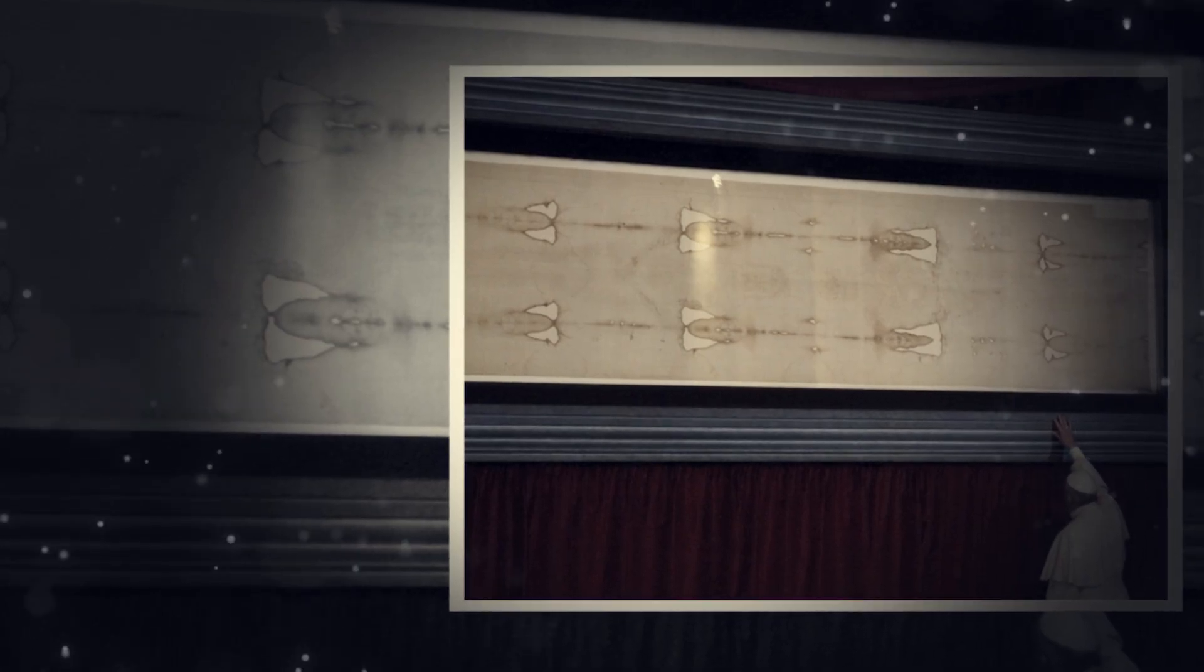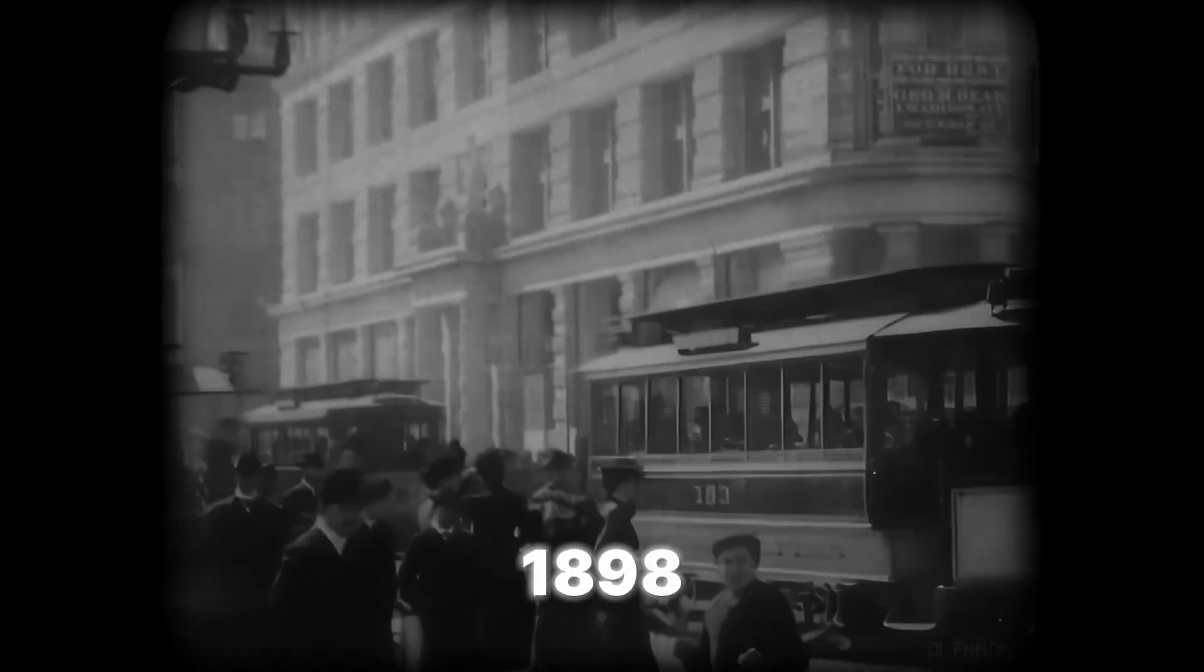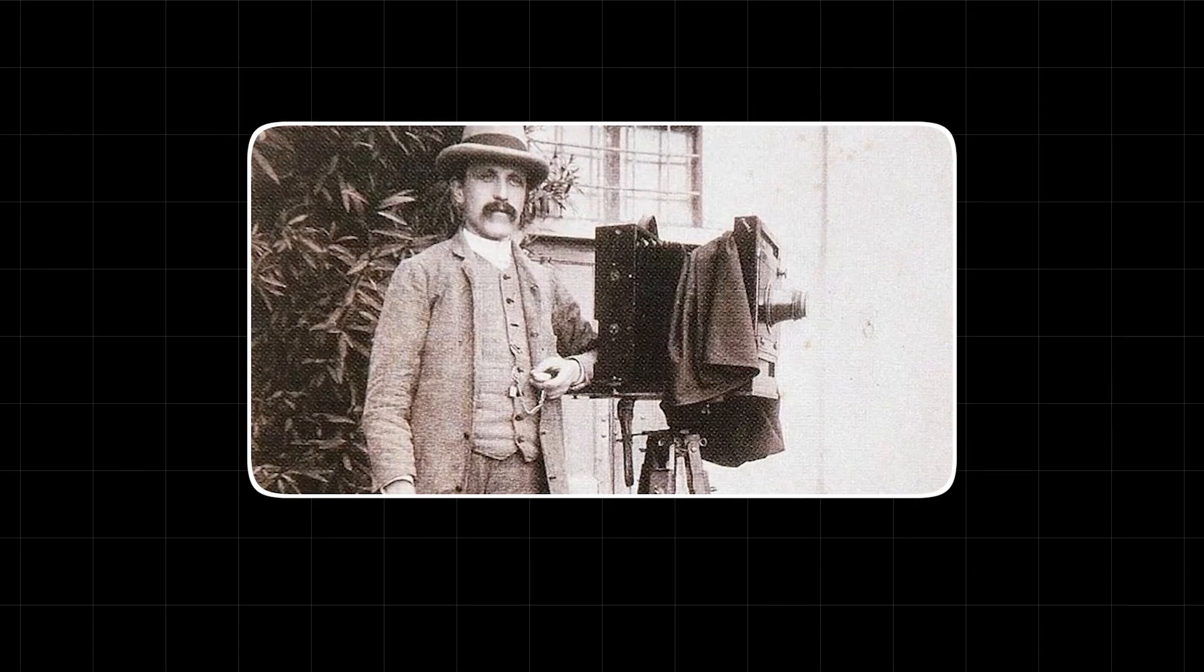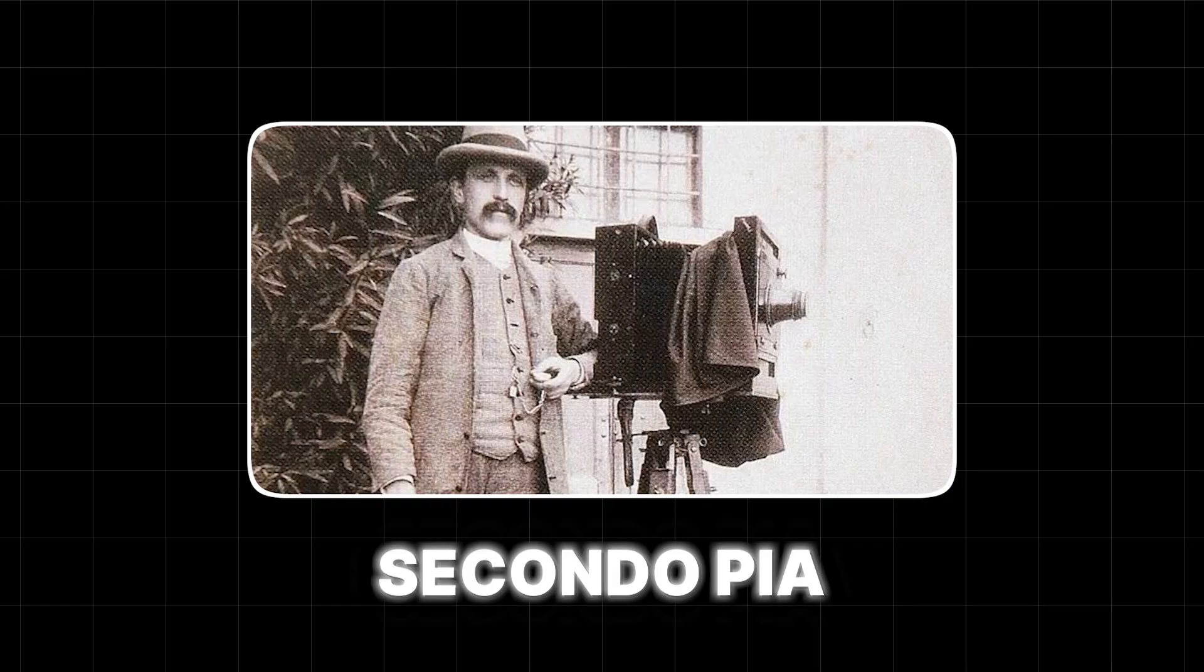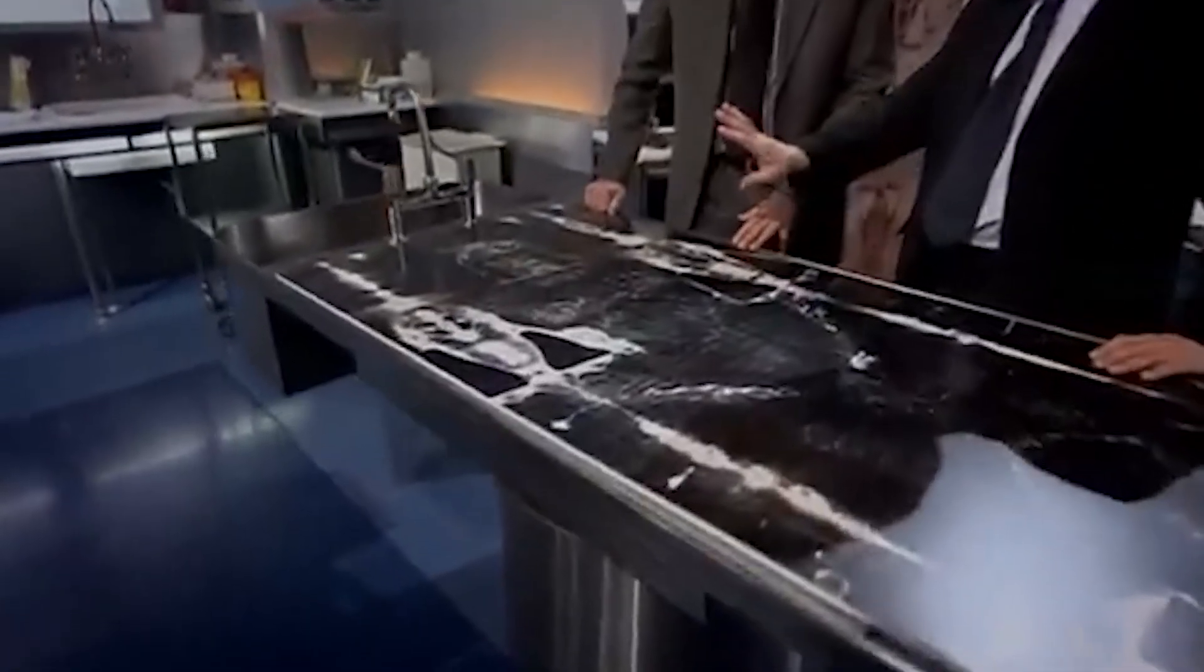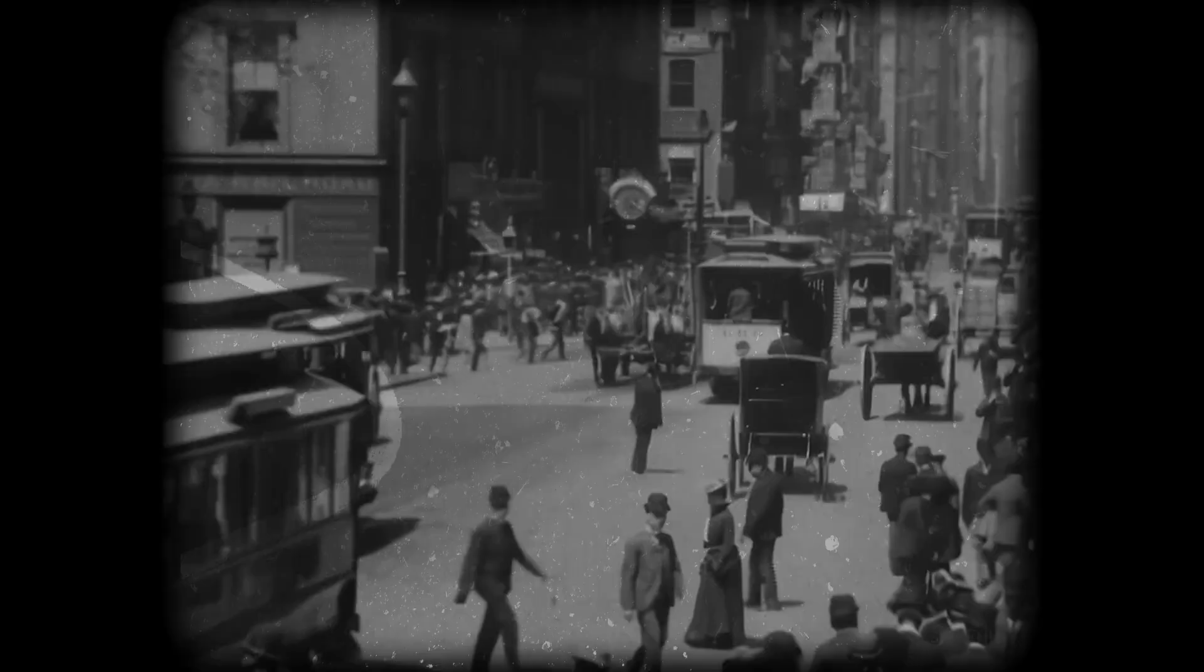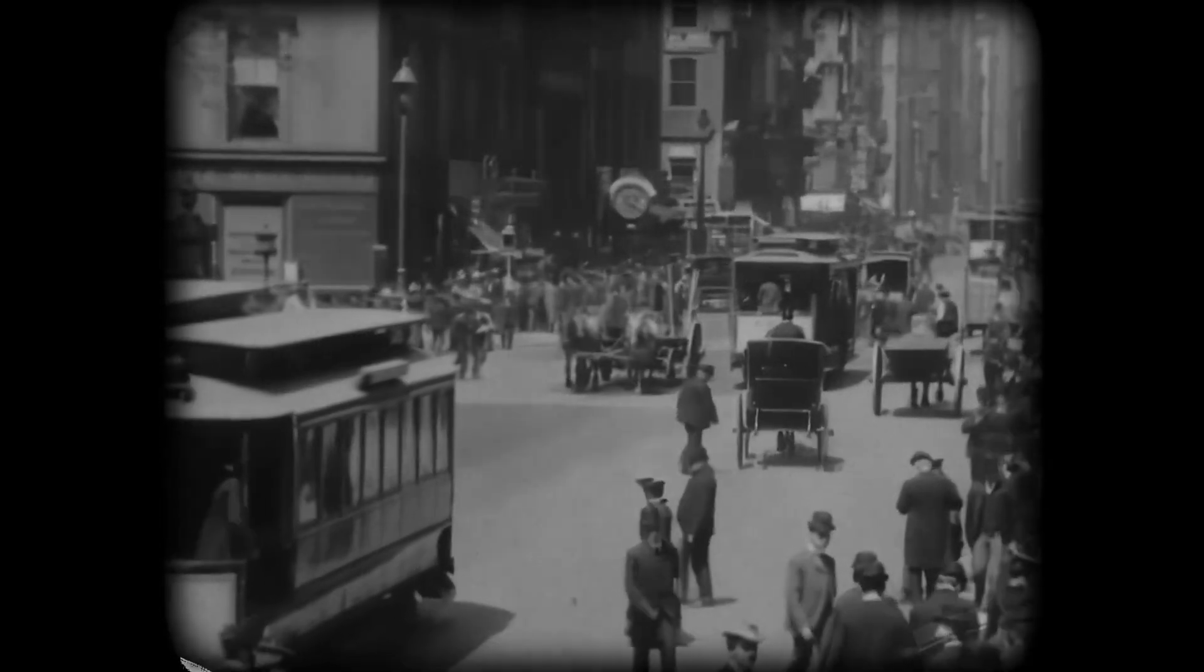To understand why this is a bombshell, you have to know about the Shroud's other mysteries. This cloth has always been a complete head-scratcher. Back in 1898, an Italian photographer named Secondo Pia took the first-ever picture of it. When he developed the glass plate negative, he almost dropped it in shock. In the dark room, the negative image on the plate revealed a stunningly clear, detailed positive portrait.